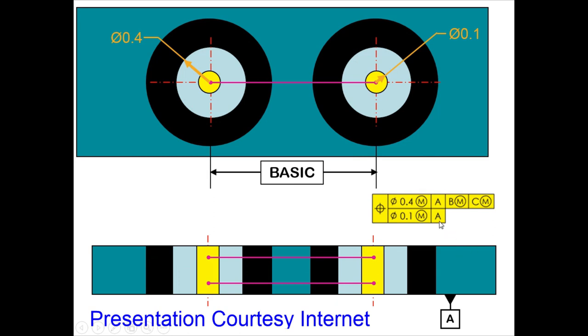In the second condition, we have primary datum A, which is nothing but the bottom surface. So if you give like this, then what will happen?